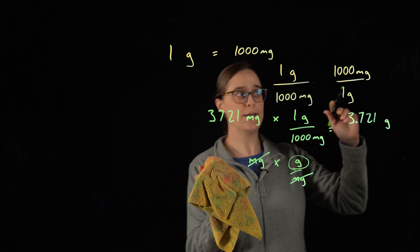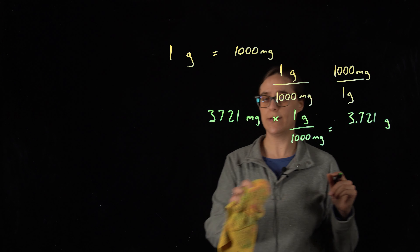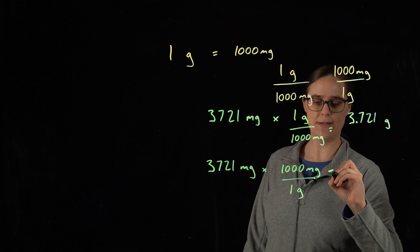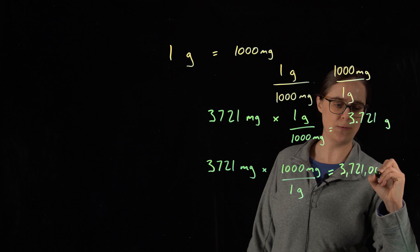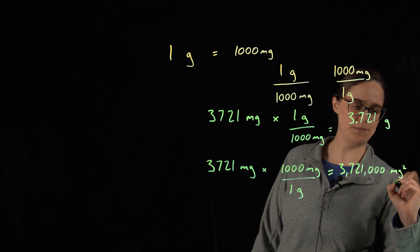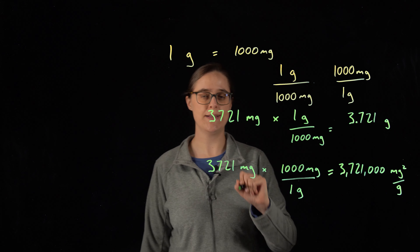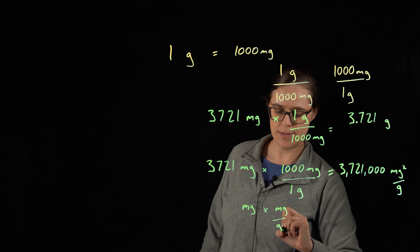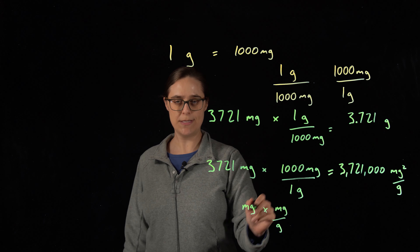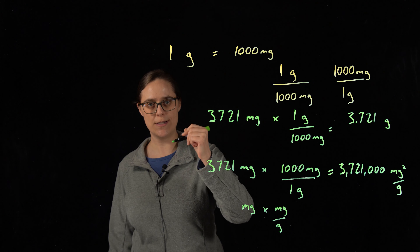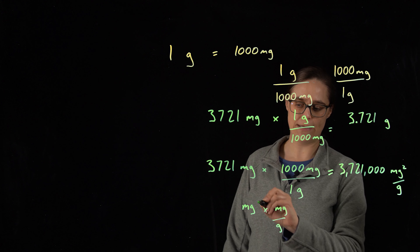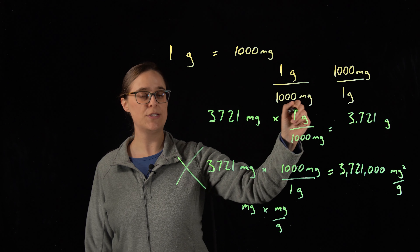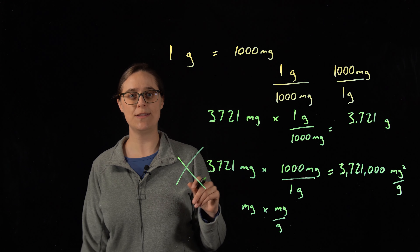If I had chosen the other fraction, I would be able to tell I chose the wrong one because my units would not make sense. I would have gotten an answer of 3,721,000, but my units would be milligrams squared divided by grams. Rewriting using only units: milligrams times milligrams over grams — none of my units cancel out. Both milligrams are in the numerator; you can only cancel if one is in the numerator and one in the denominator. So I end up with milligrams squared over grams, which is wrong. You can choose which fraction to use based on which one gives you the desirable units.